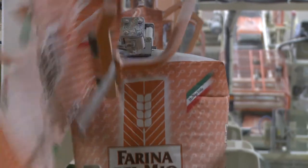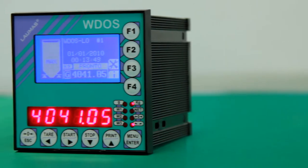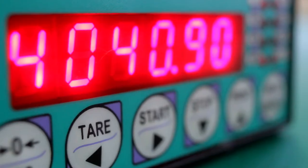The W-DOS model, with double display and function keys, represents an economic but high-performance solution for managing even complex batching systems.